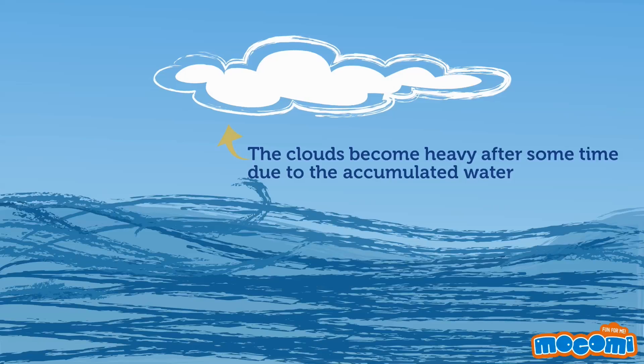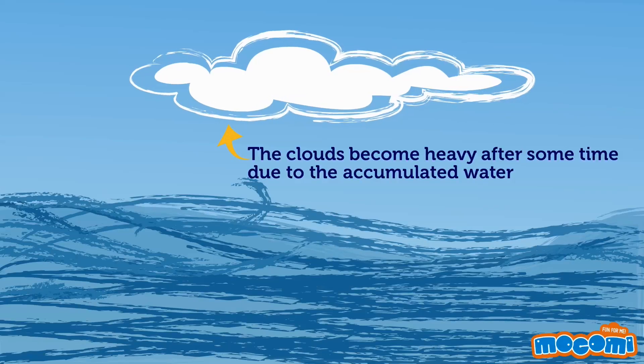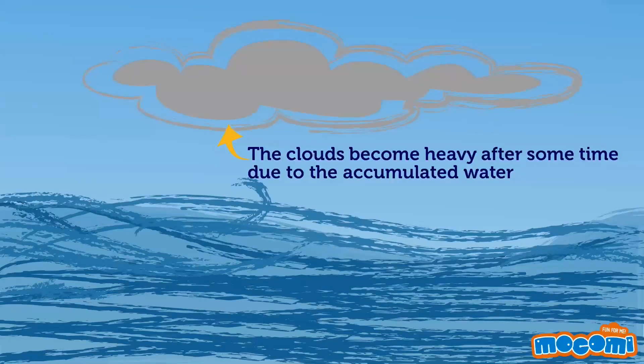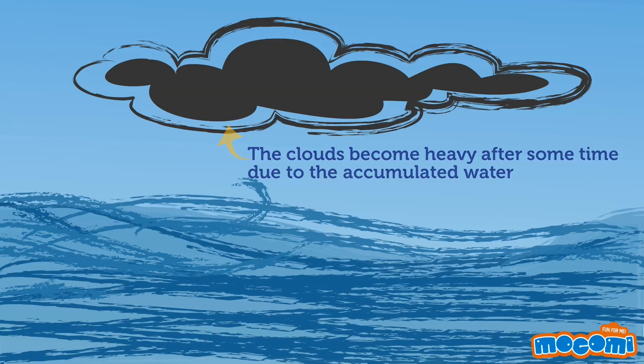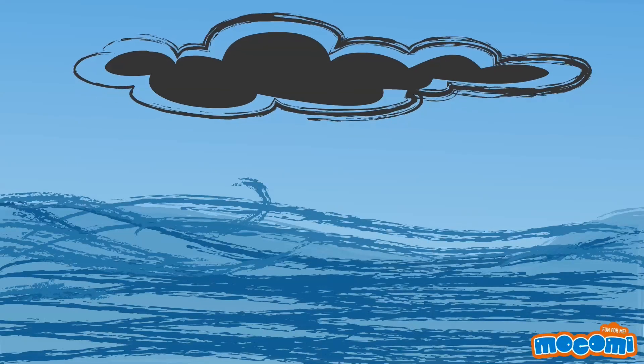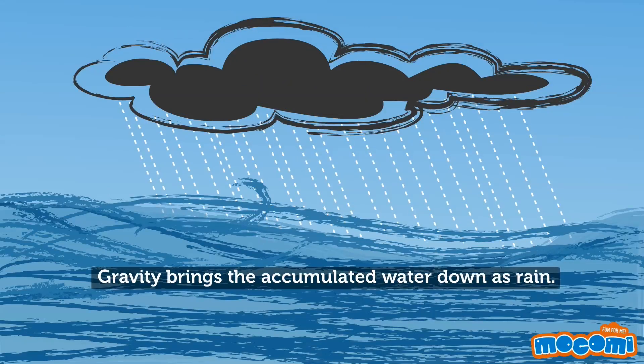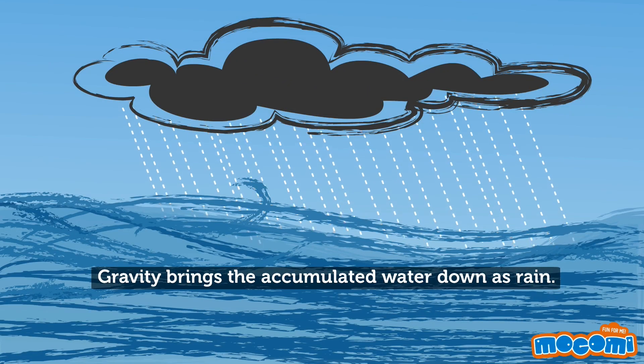The clouds become heavy after some time due to the accumulated water, and gravity brings the accumulated water down as rain.